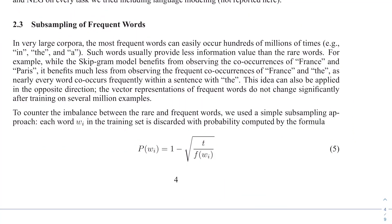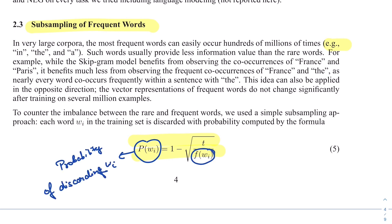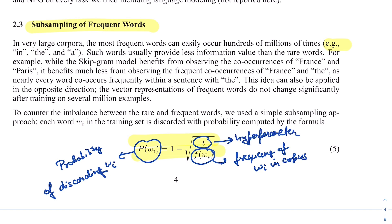The second optimization is subsampling frequent words like 'in,' 'the,' and 'a.' The probability of discarding word w_i is given by P(w_i) = 1 - sqrt(t / f(w_i)), where f(w_i) is the frequency of the word in the corpus and t is a hyperparameter. The higher the frequency of a word, the higher the probability of it being discarded during training.